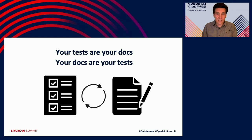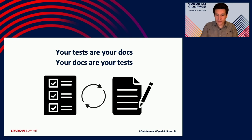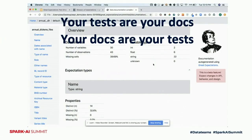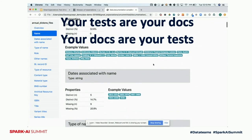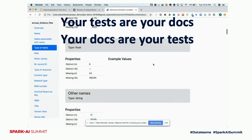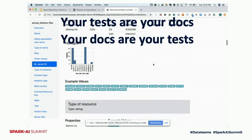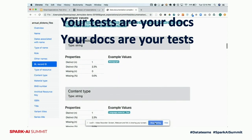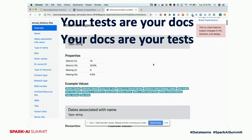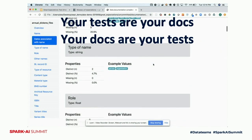One of the core realizations at Great Expectations is that data testing and data documentation are two sides of the same coin. Everyone understands documenting data is very important, yet it's extremely challenging to keep documentation up to date. Great Expectations can take a suite of expectations describing a particular data set and render it into HTML, which can be automatically deployed as a static website your team can use as a source of truth for communicating about what data you have and what it should look like.